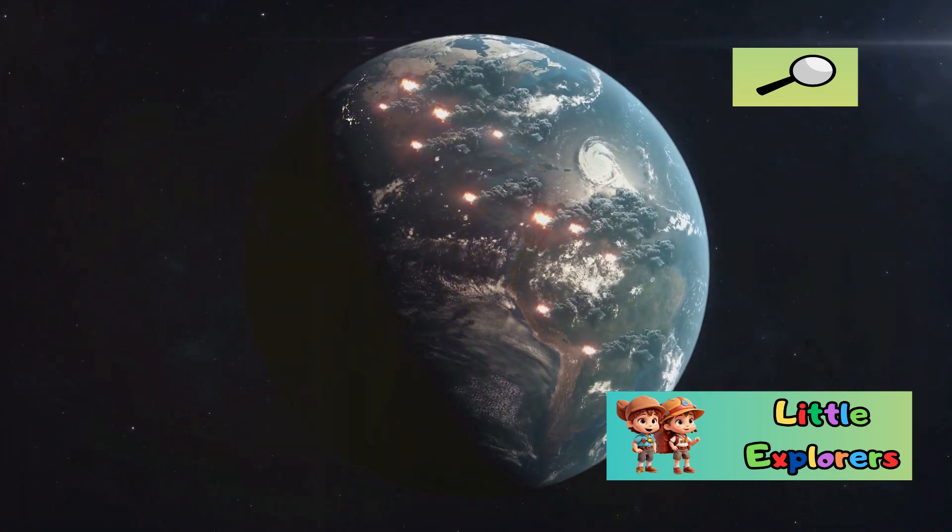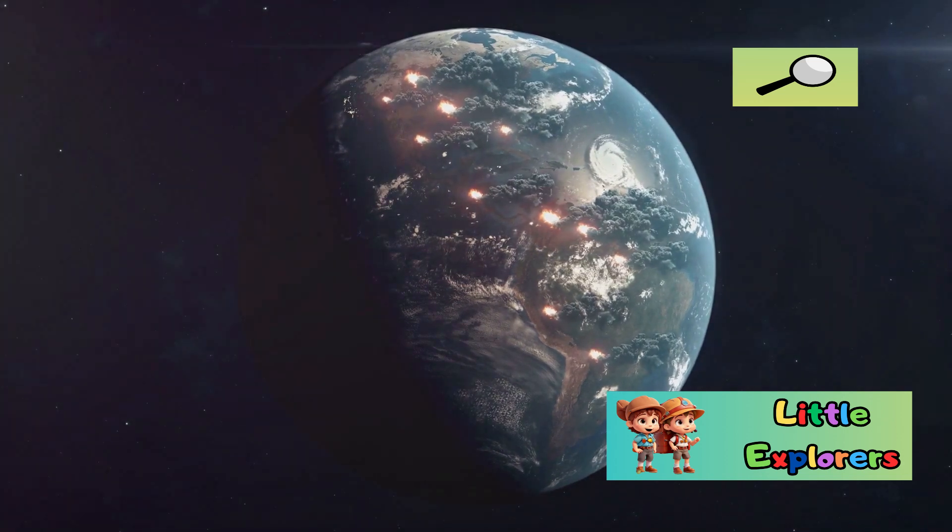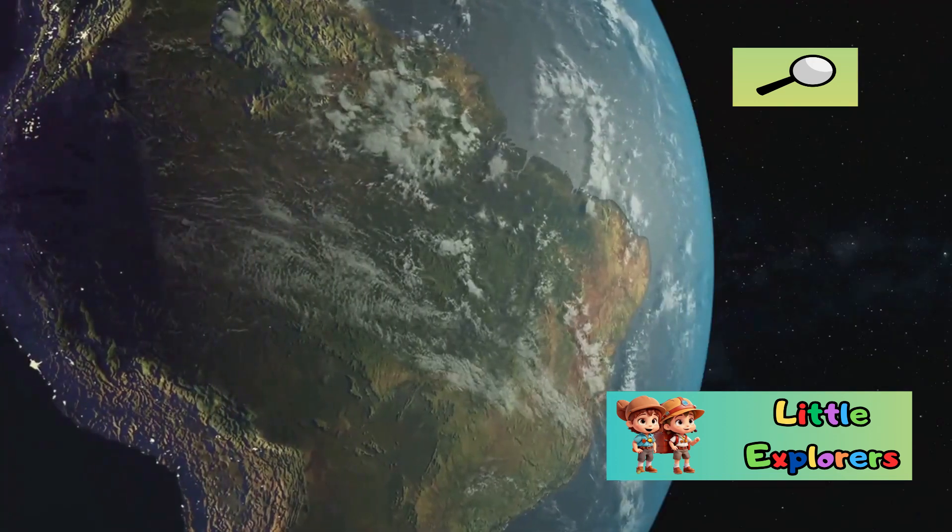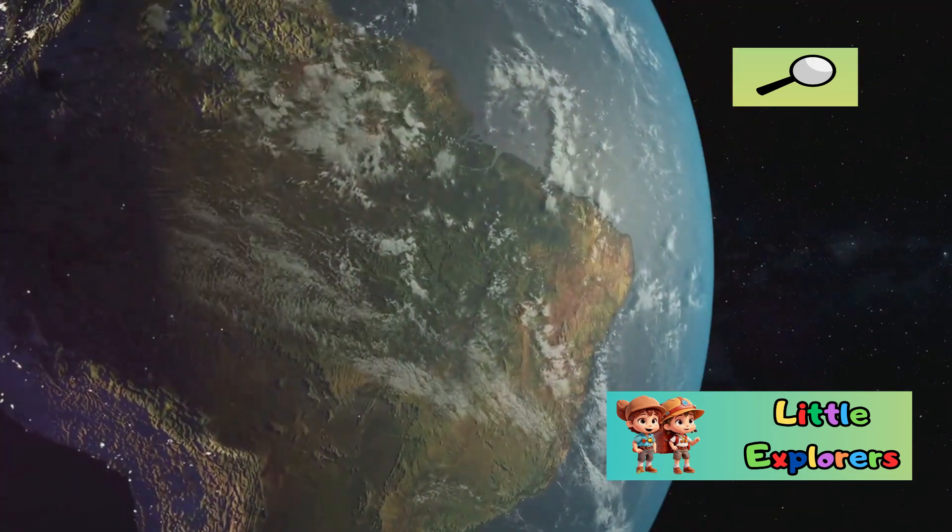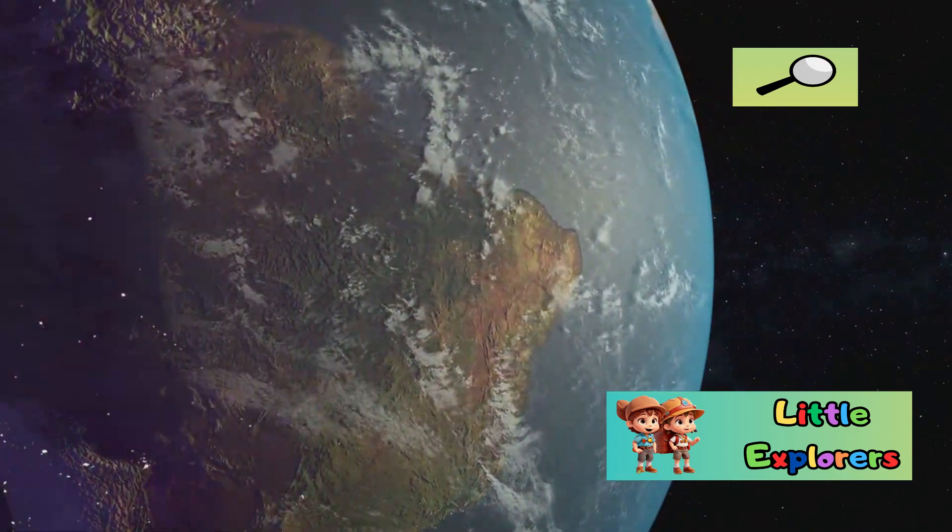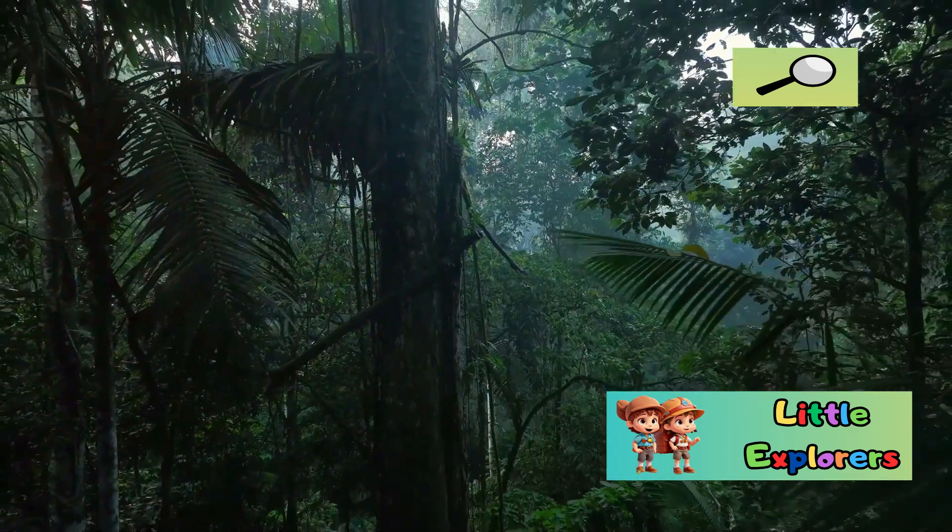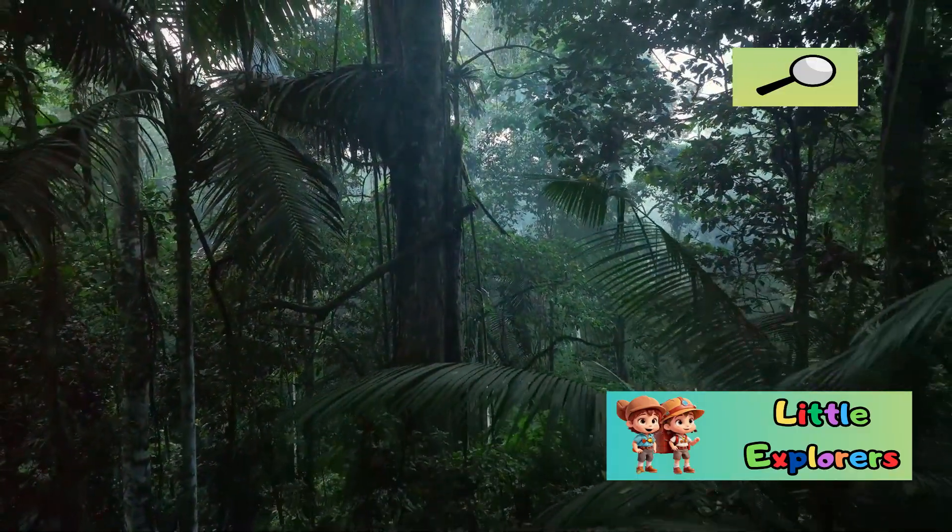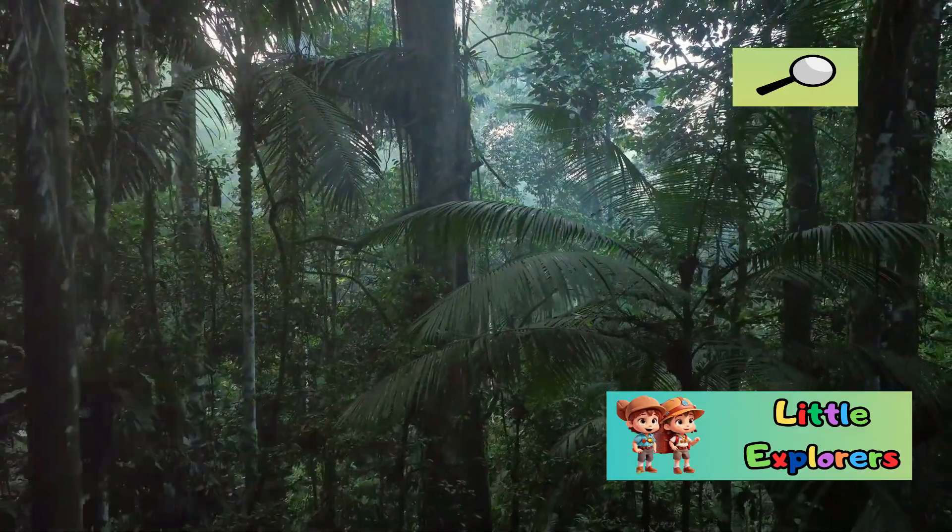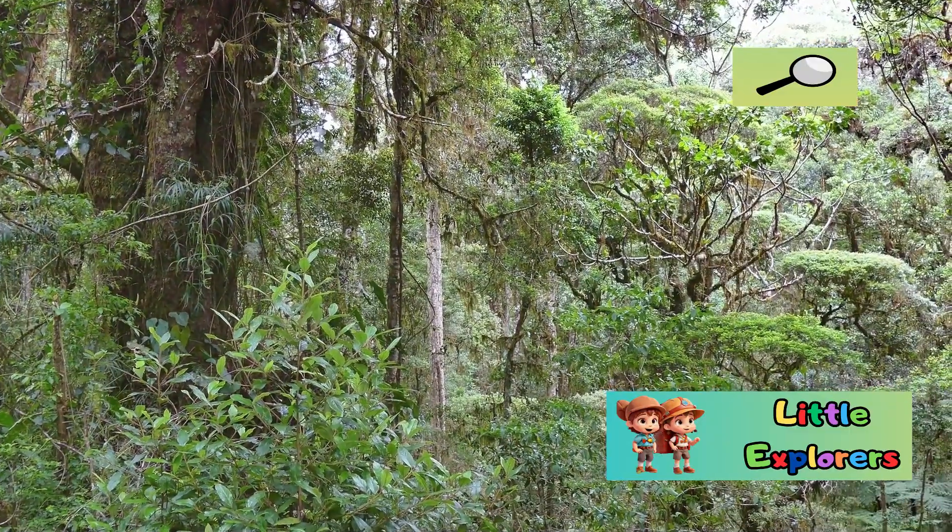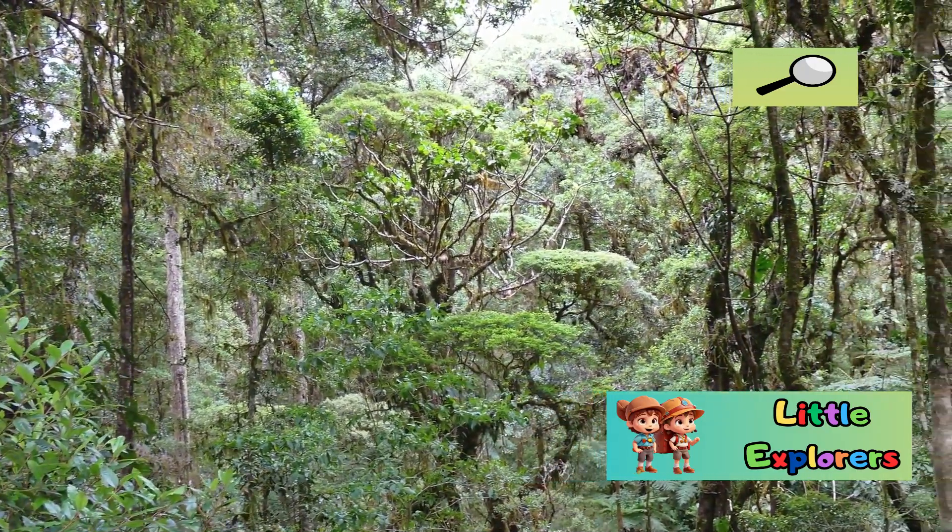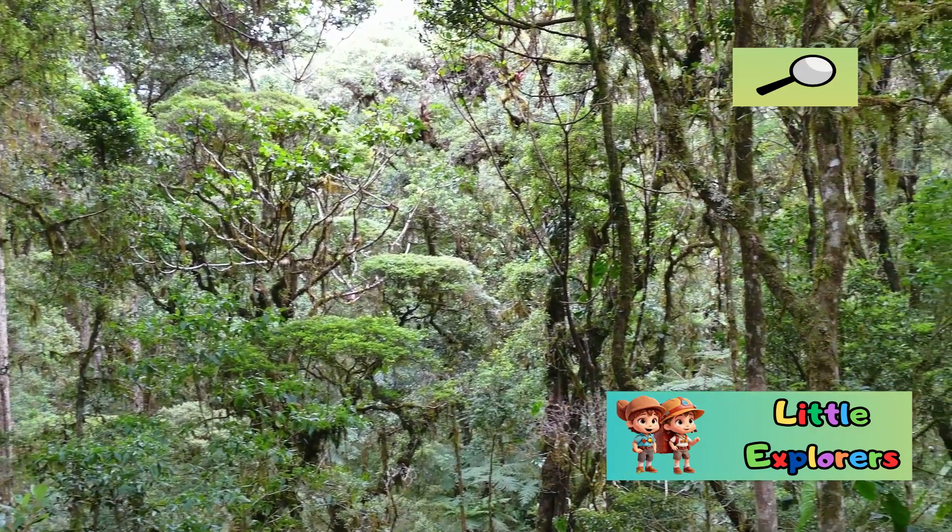These bodies of water are interconnected through the water cycle, a continuous process that purifies and redistributes water across the globe. This cycle ensures that water is available in various forms, from the vast oceans to the tiniest droplets in the atmosphere. This abundance of water is a key reason why our planet is teeming with life. It supports diverse ecosystems, from the lush rainforests to the arid deserts, each uniquely adapted to their water availability.